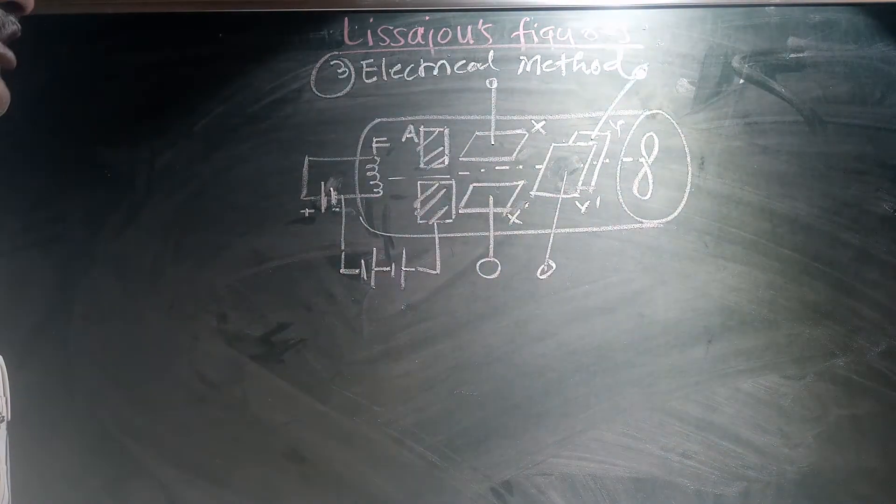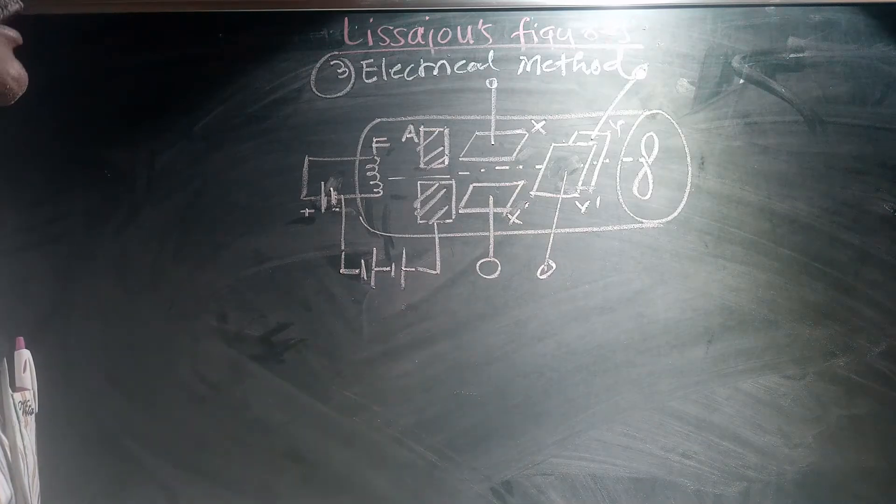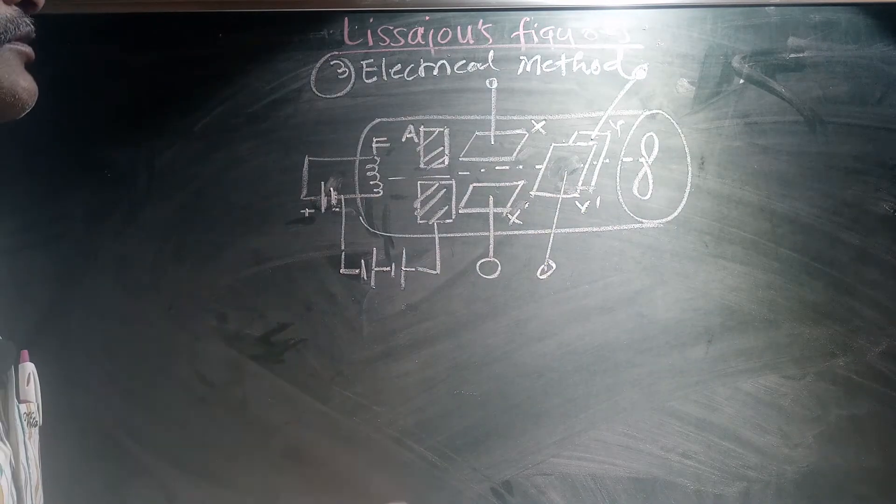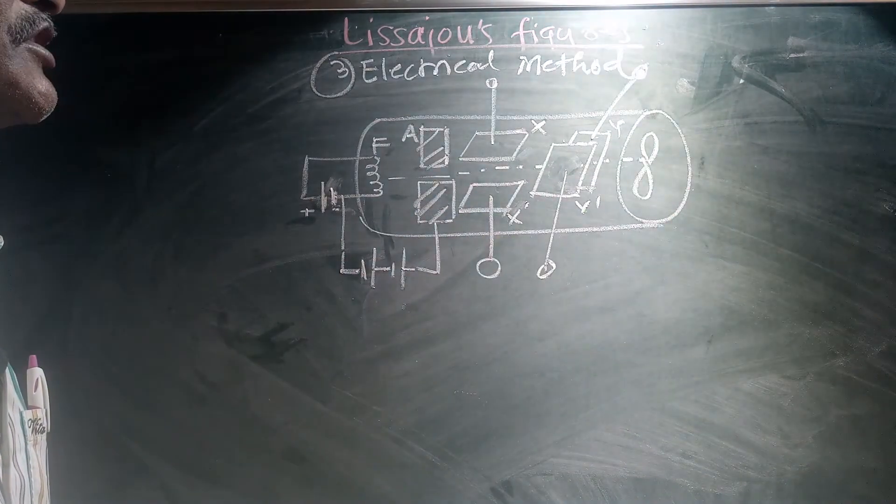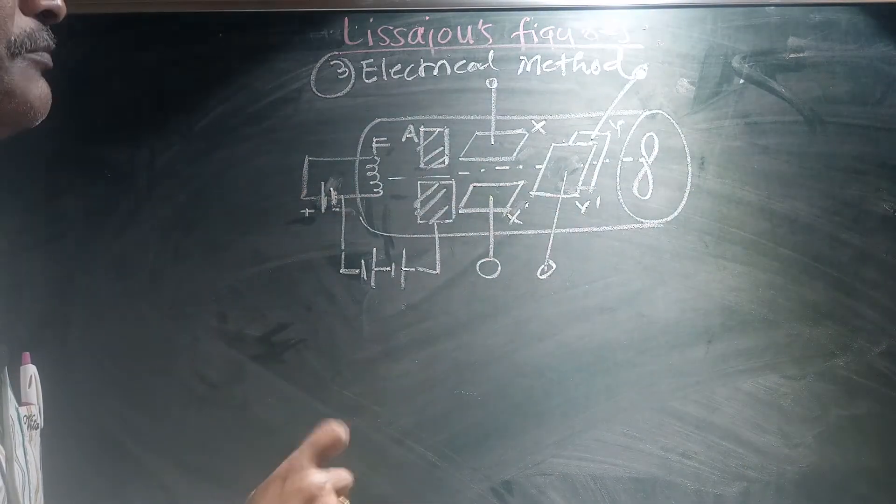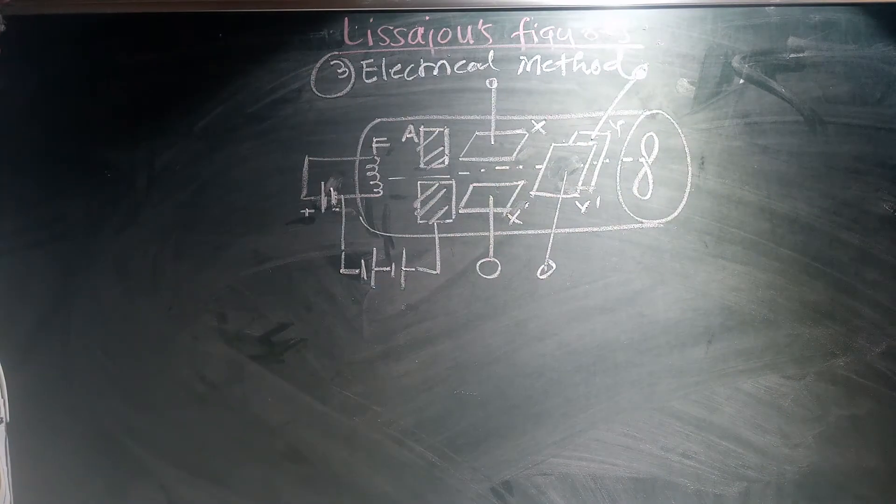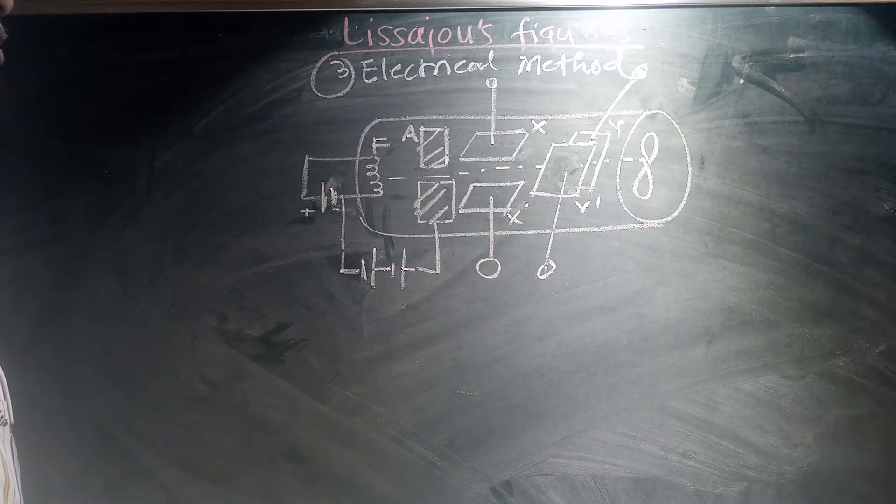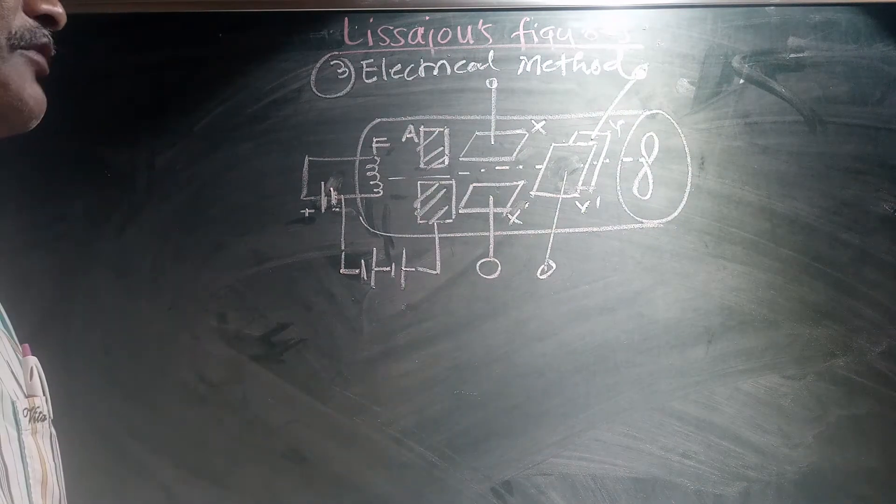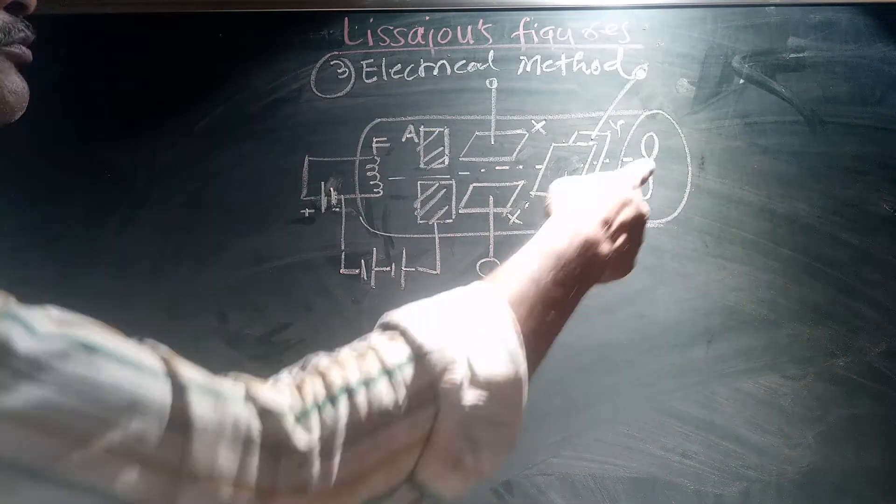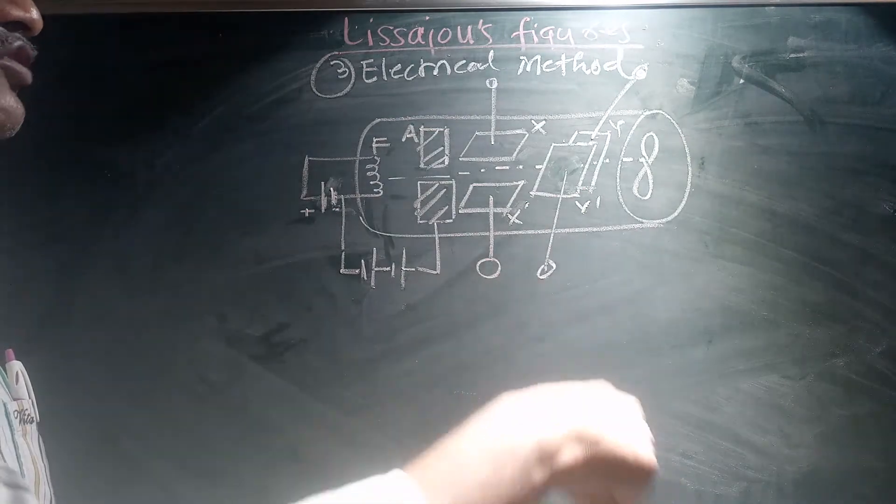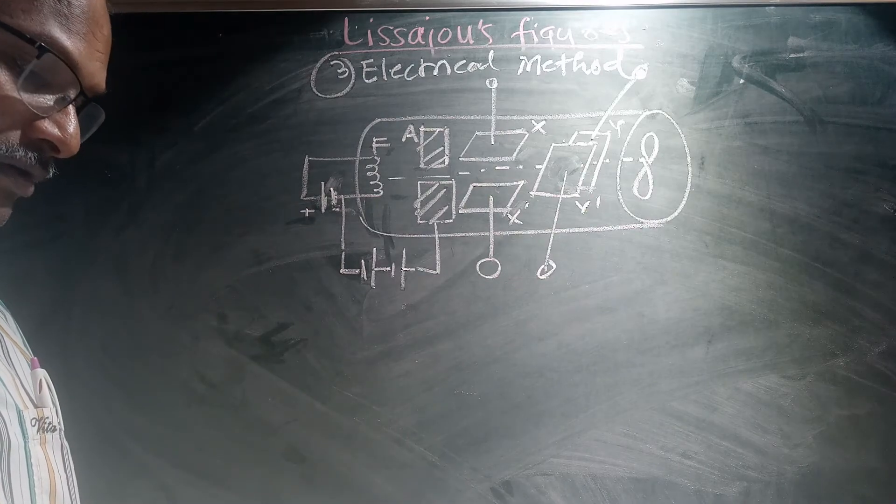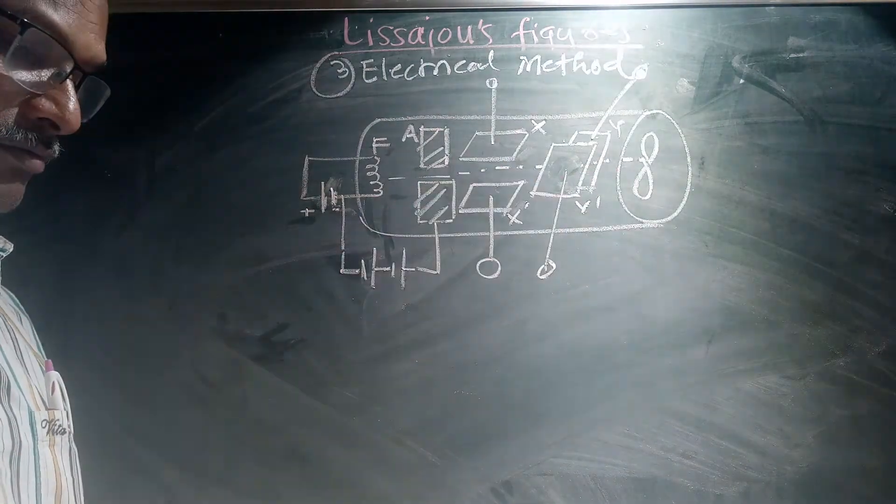If the electrical field is applied to the X-X' plates, then it will trace path horizontally. When the electrical field is applied to the Y-Y' plates, then it will have motion in the vertical plane. So simultaneously if electrical field is applied to both X and Y, then it will produce figures, Lissajous figures of various shapes.